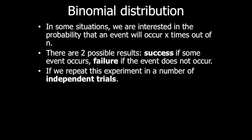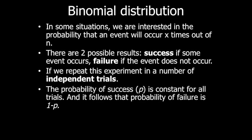Second, we repeat this experiment in a number of independent trials — meaning in each trial the probability must be independent and not dependent on each other. For example, if we toss a coin five times, in all five trials the probability of getting a success is the same. The probability of success p is constant for all trials, and the probability of failure is one minus p, the complement of p.